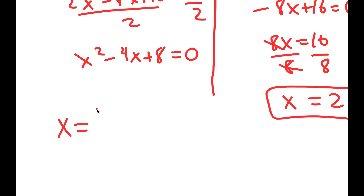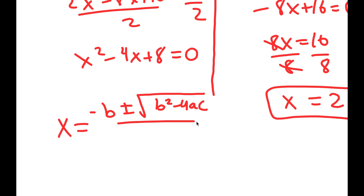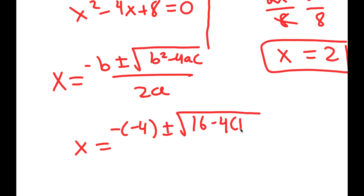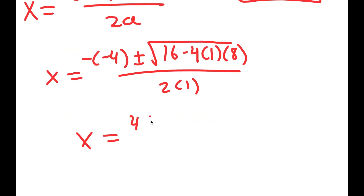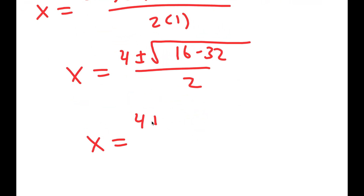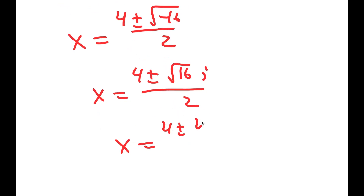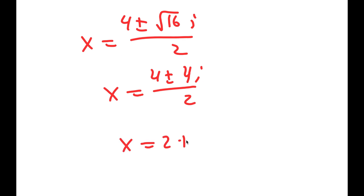Now for the left-hand side equation, x squared minus 4x plus 8 equals 0, I'm going to use the quadratic formula: negative b plus or minus the square root of b squared minus 4ac, all over 2a. So I get x equals negative negative 4 plus or minus the square root of 16 minus 4 times 1 times 8, all over 2 times 1. This equals 4 plus or minus the square root of 16 minus 32 over 2, which is 4 plus or minus the square root of negative 16 over 2, which equals 4 plus or minus 4i over 2, giving x equals 2 plus or minus 2i.